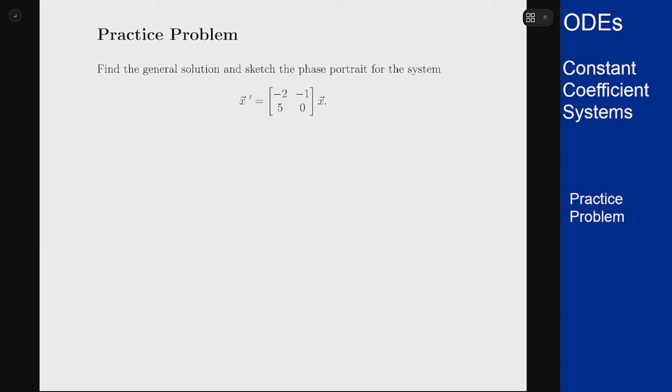always to find the eigenvalues which are given by determinant of A minus lambda I equals zero or in this case minus two minus lambda zero minus lambda plus five which is lambda squared plus two lambda plus five equals zero.